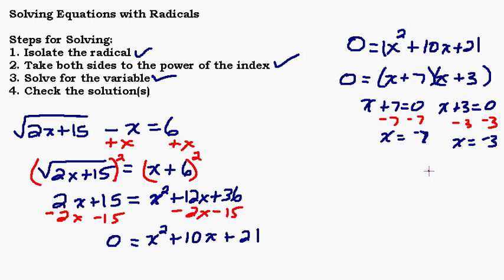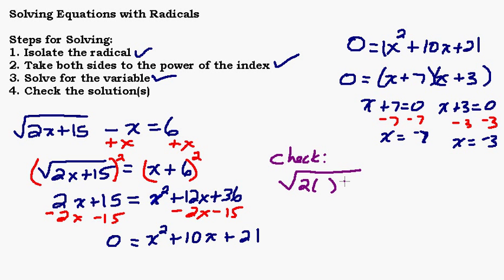A lot of times when you square both sides, especially when you come up with two solutions, one of them might not work — you get what's called an extraneous root. To check the solution you have to go all the way back to the original equation. Don't check it somewhere along the way. Check it before you squared both sides — from the beginning — and you won't have to worry about that.